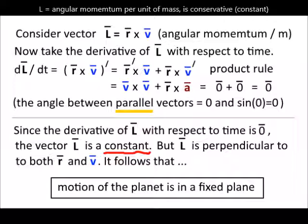Vector L is, by the definition of cross product, perpendicular to both vector r and vector v. It follows that the motion of the planet must be in the fixed plane formed by vector r and vector v.